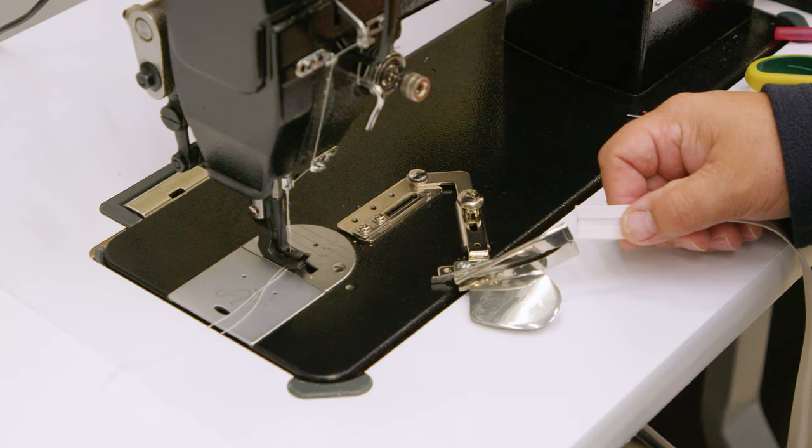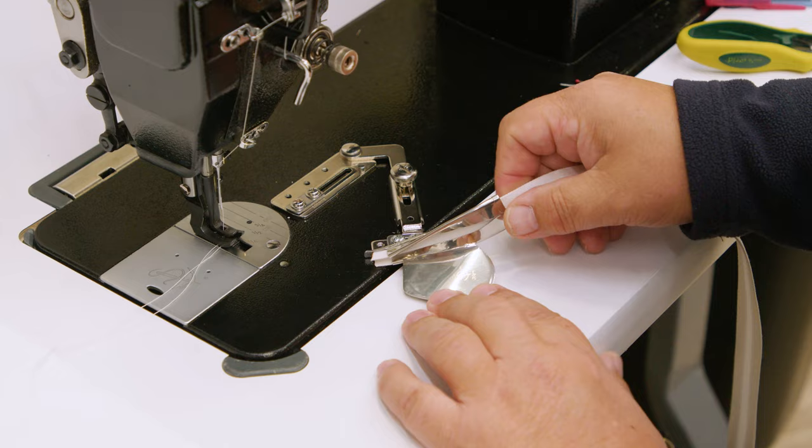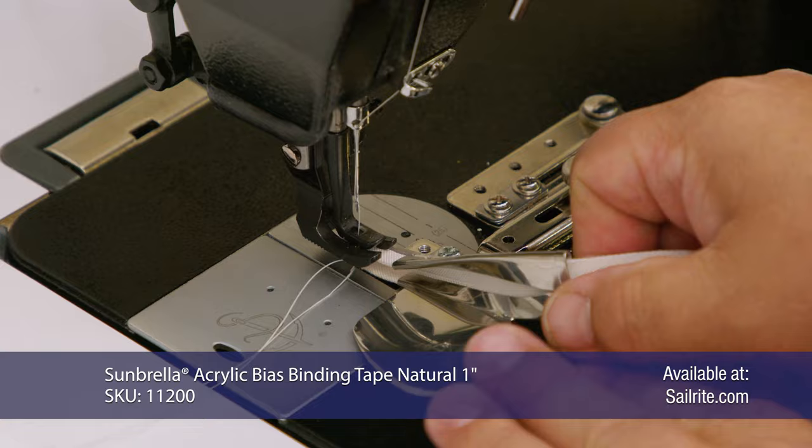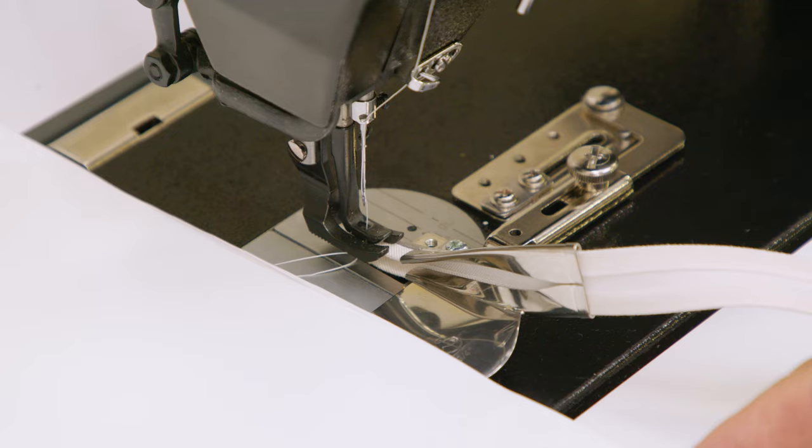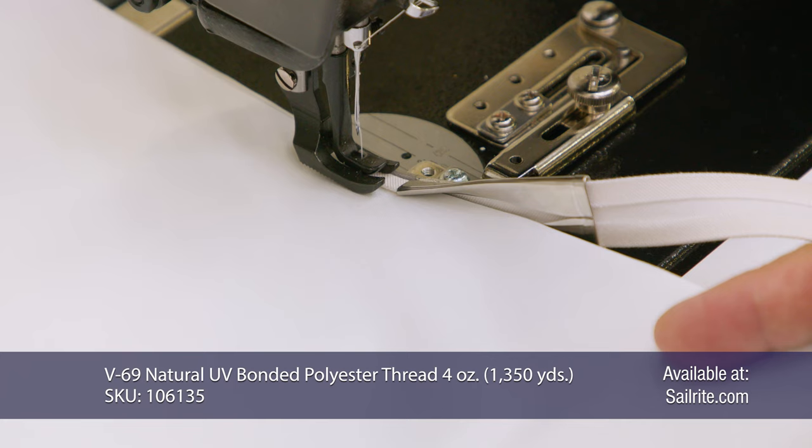This is a three quarter inch Sunbrella binding which looks good and I'm going to put it through a three quarter inch binder. I'm going to just feed it through so that the binding is basically right where the needle is going to enter. Now you can start this anywhere you'd like. I'm going to start it right here in the middle position of one side. You need to make sure that your fabric is fed in to the fold of the binding at the exiting point of the binder.